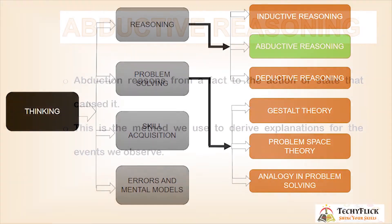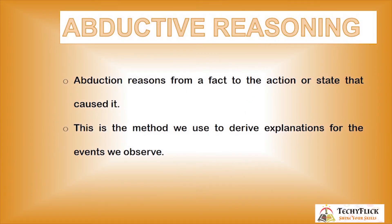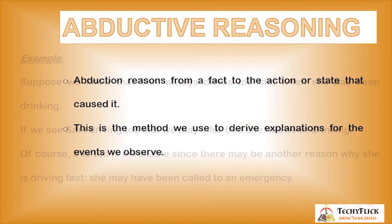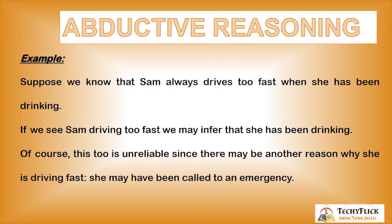Abductive Reasoning reasons from a fact to the action or state that caused it. This is the method we use to derive explanations for the events we observe. For example, suppose we know that Sam always drives too fast when she has been drinking. If we see Sam driving too fast, we may infer that she has been drinking. Of course, this is unreliable since there may be another reason — she may have been called to an emergency.